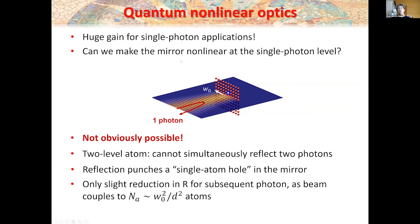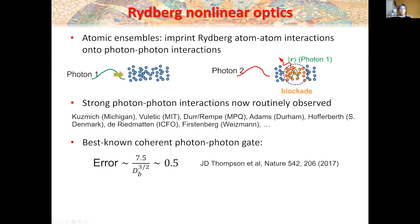Combining Rydberg interactions with atomic ensembles is already well-studied to achieve photon-photon interactions. For a disordered ensemble, there has been a proposed photon-photon gate where the error scales like one over optical depth per blockade radius to the three-halves power — and in current R experiments, this parameter is about 50%. The question is: can you use arrays to beat the scaling and get an error much better than 50%, by essentially using selective radiance?